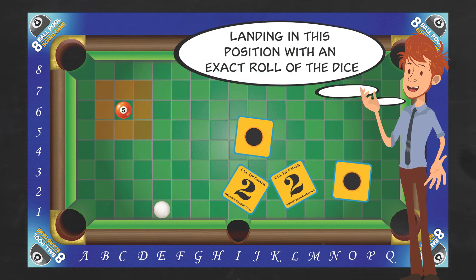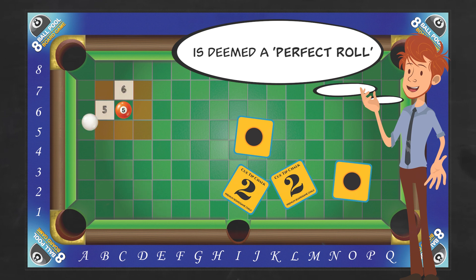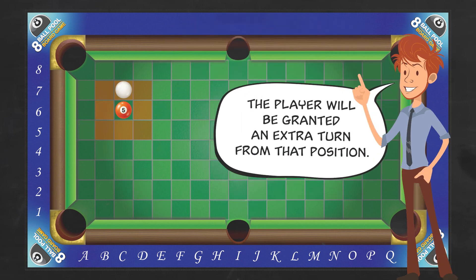Landing in this position with an exact roll of the dice is deemed a perfect roll. The player will be granted an extra turn from that position.